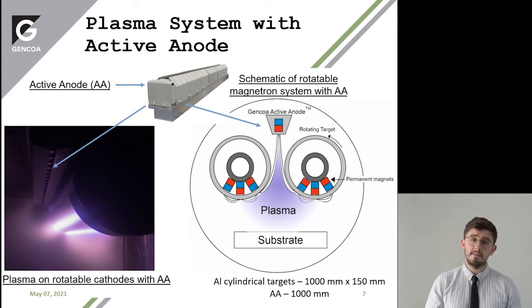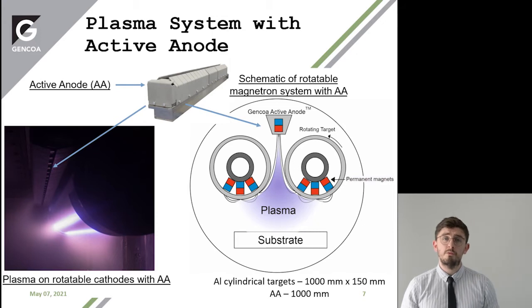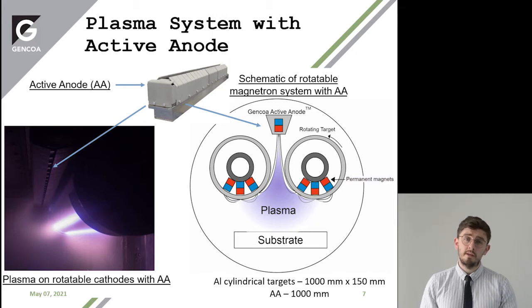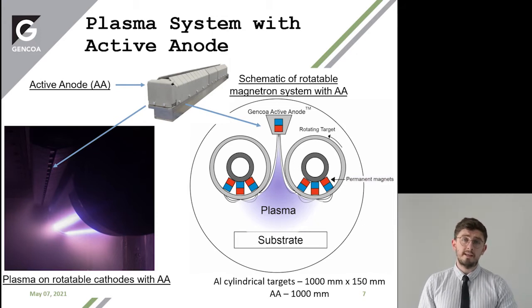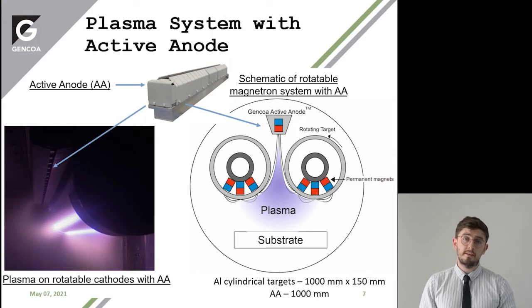Here's the schematic of the system with which many of the tests were run today — aluminium cylindrical targets about a metre in length, and the active anode also mirrors the length of the cathode, about a metre as well.